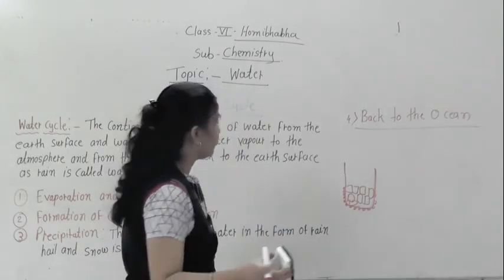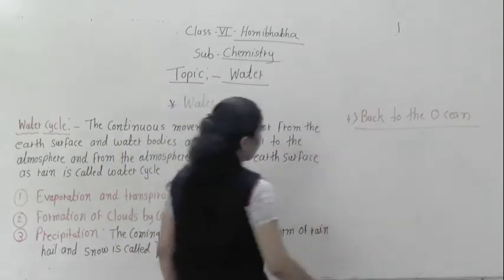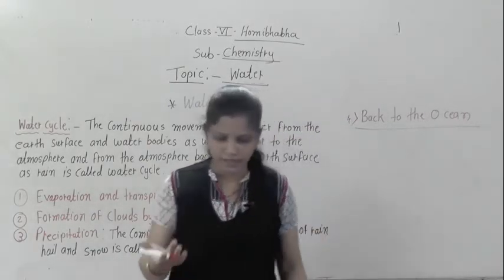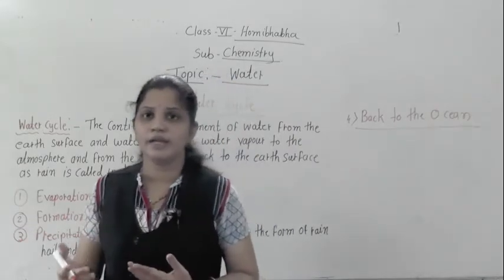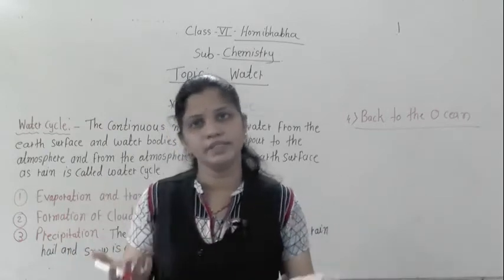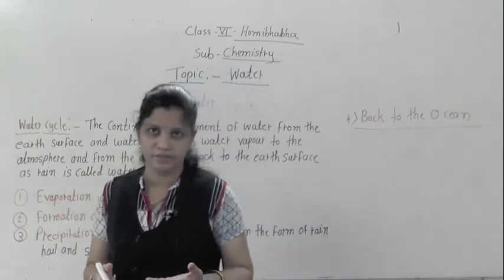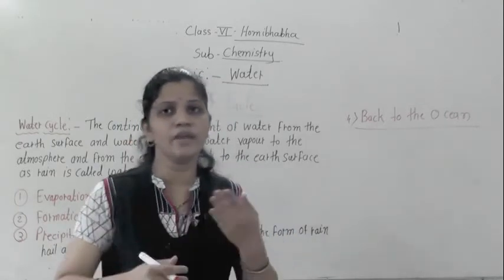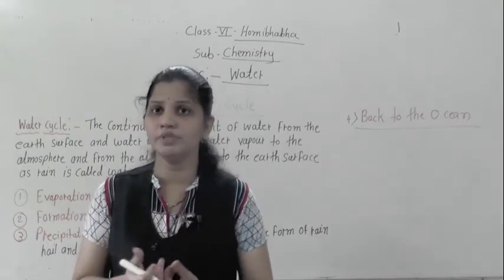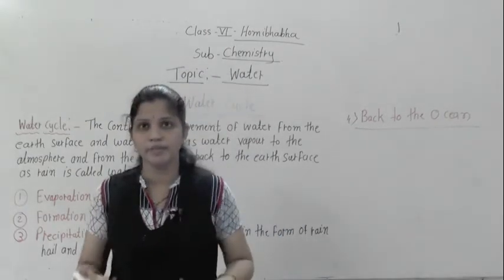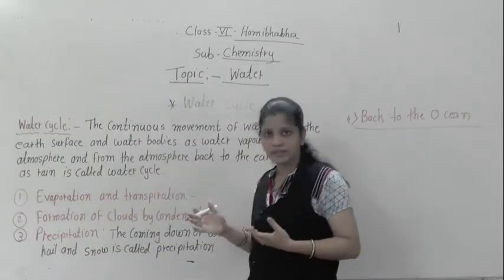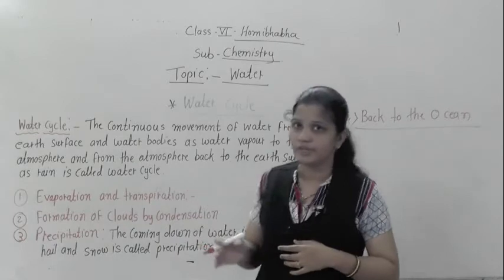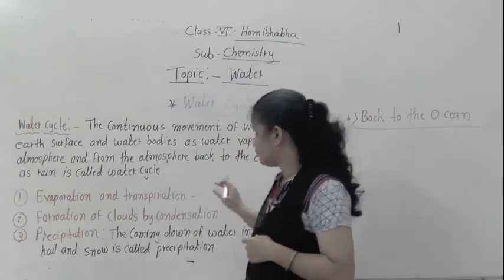Now the next important point is the water cycle. Why is it known as a water cycle? We know there are mostly three seasons: rainy season, summer season and winter season. Every year when June starts, the rains come. This happens every year — but how? What is the reason behind it? That is what we are going to discuss now. Let me read the definition, which is also in your textbook.